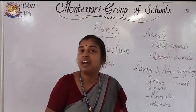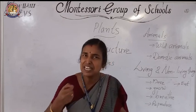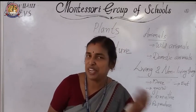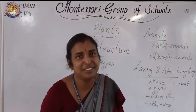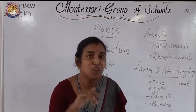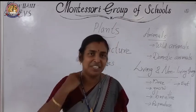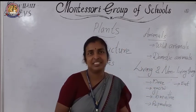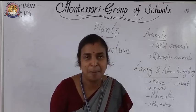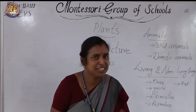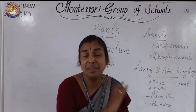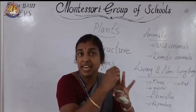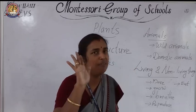Next we have climbers. Climbers have a very lean stem and always need support — they want to climb others. Your favorite money plant, pea plant, and beetle plant are all examples of climbers. The next one is creepers. Creepers grow along the ground. Melon, pumpkin, and bottle gourd — have you seen and eaten them? They are creepers. So the five types of plants are trees, shrubs, herbs, climbers, and creepers — total five types.